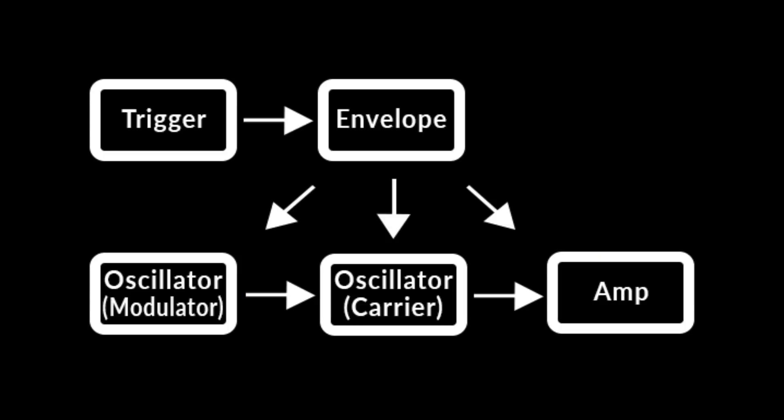Then we'll route a second oscillator to our first to get some frequency modulation, which should result in some more complex kick drum tones.